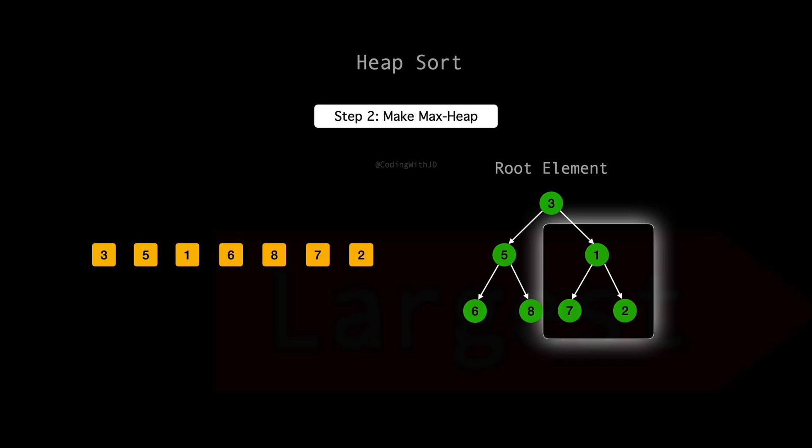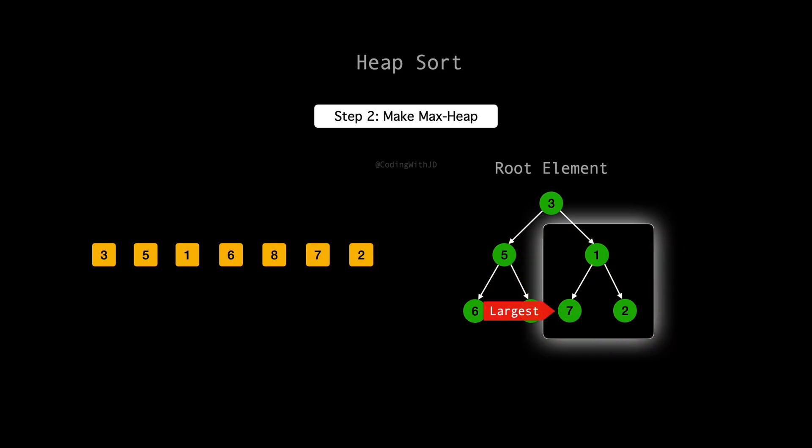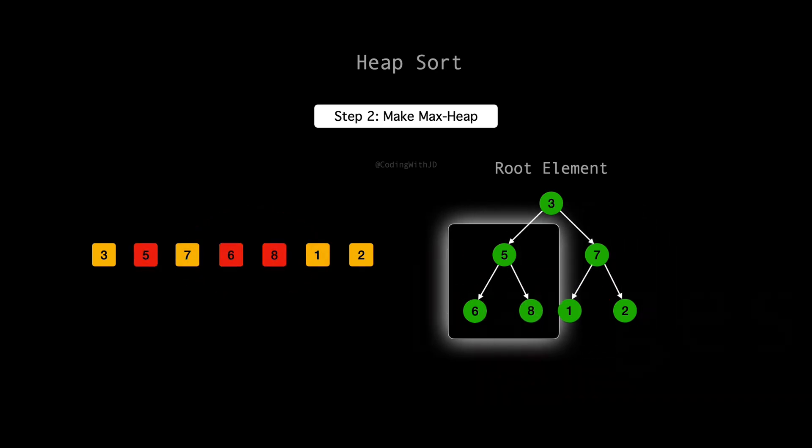First, we look at the children of 1, which are 7 and 2. Here, 7 is the larger number, so we swap 1 and 7 to keep the max heap property intact. Now, moving up to 5, its children are 6 and 8. 8 outstrips 5, so we switch them to maintain our heap structure.